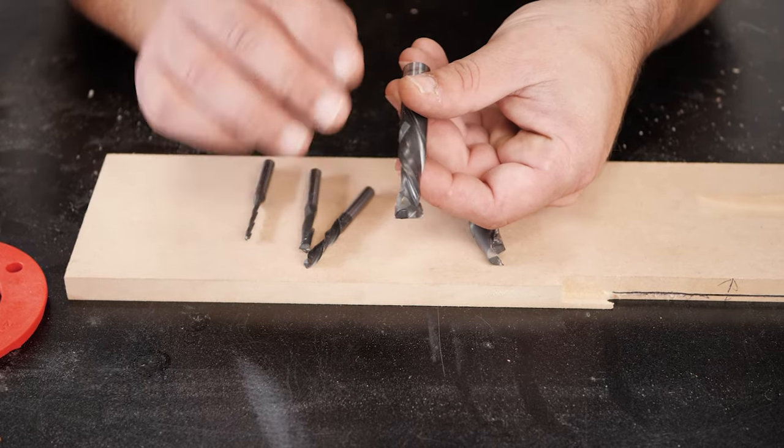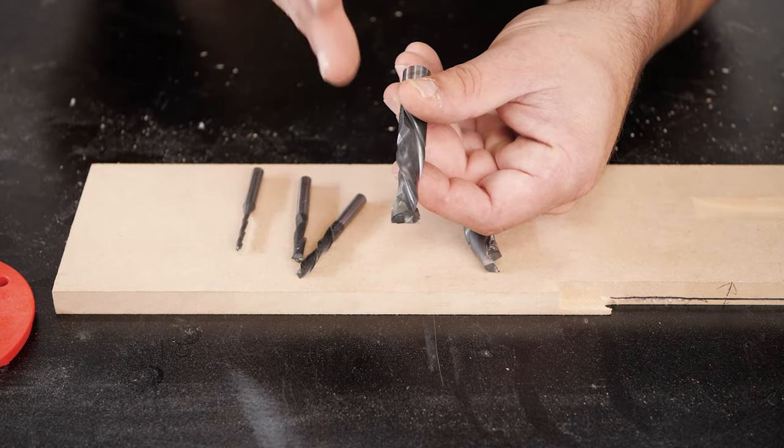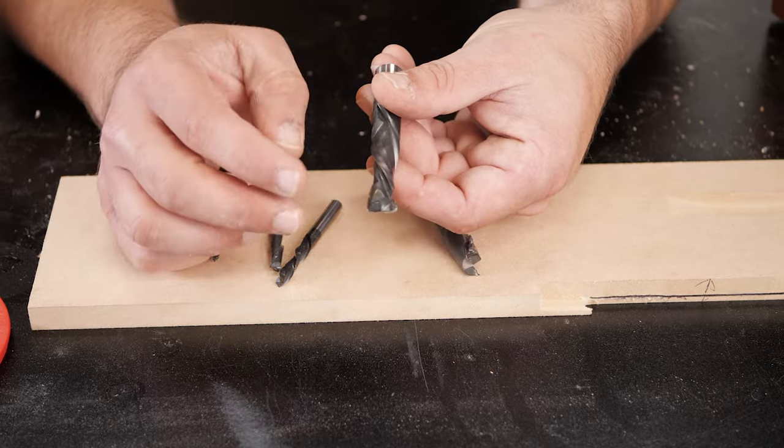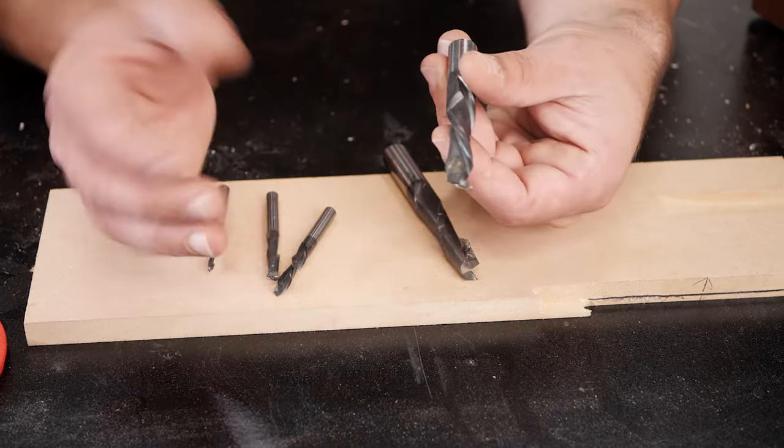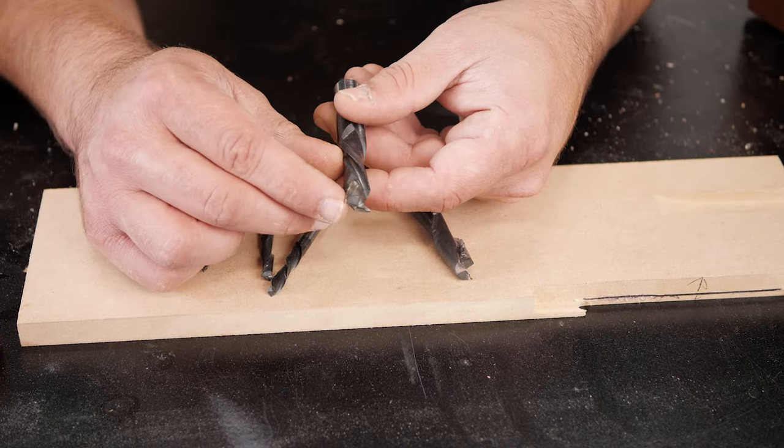A down cut is going to give you a better finish on the top of your board. As you can see, a down cut is going to force sawdust and the cut going down. This is great when you're doing through cuts or really big grooves and dados because the top of your board isn't going to get that fuzz that you can get with a router bit.